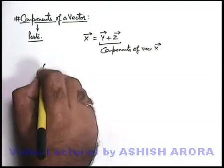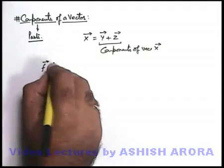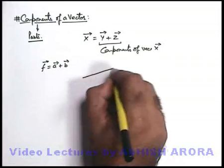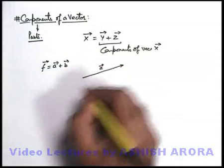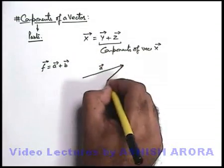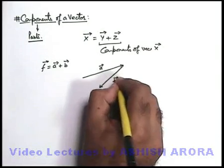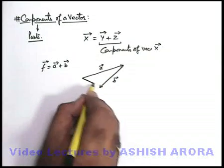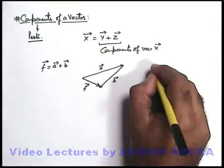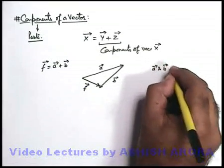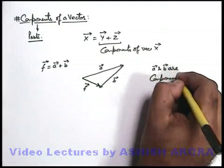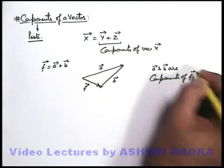For example, we have a vector f which is written as a vector plus b vector. This is vector a, and if we add vector b, so a vector plus b vector gives vector f. So here we can write: a vector and b vector are components of f vector.